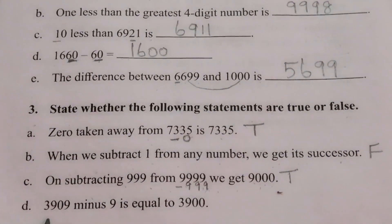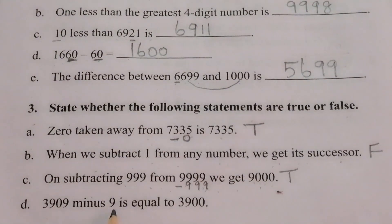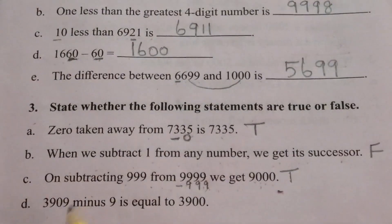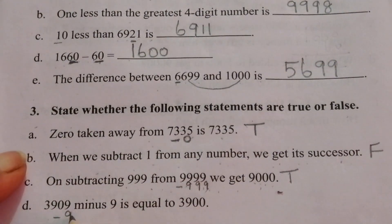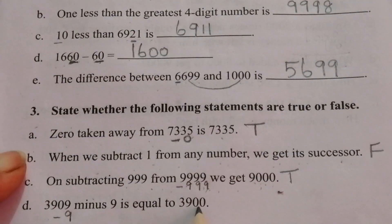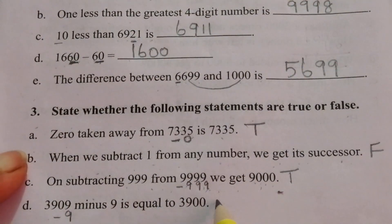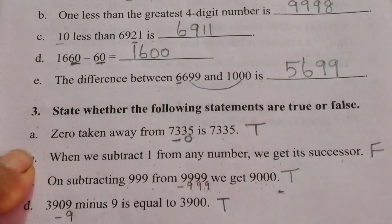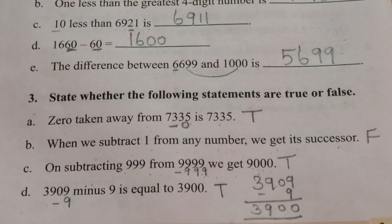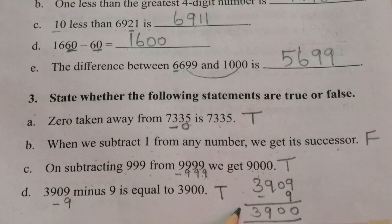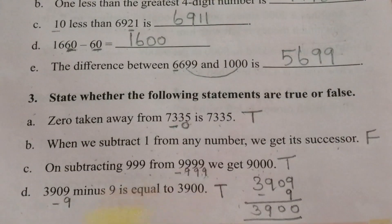D: Three thousand nine hundred nine minus nine equals three thousand nine hundred. Checking: nine minus nine is zero, this zero and the nine and the three remain — so the statement is true. You can use the traditional method to verify the answer.